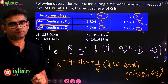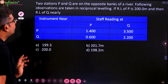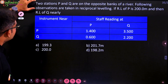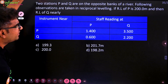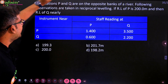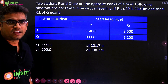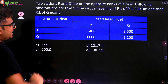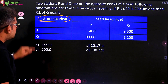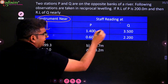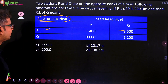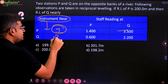That's how we solve the first problem. Now go to the second problem. There is a slight difference — see the problem. Stations P and Q are on the opposite banks of a river. Following observations are taken in reciprocal leveling. If RL of P is 200 meters, find RL of Q. Here instrument near P is instrument position one, and instrument near Q is instrument position two — same logic applies.